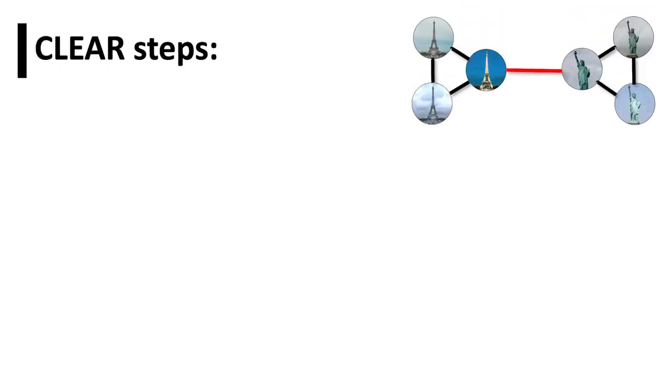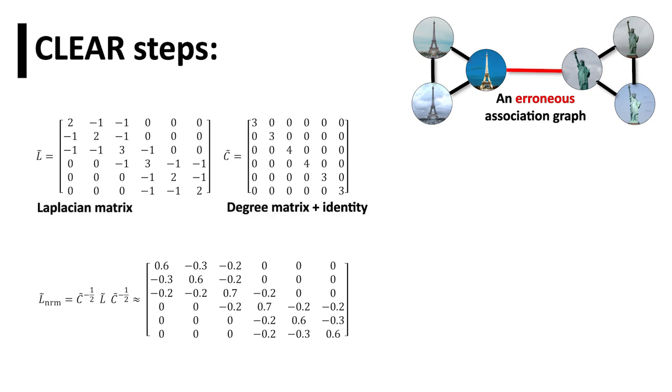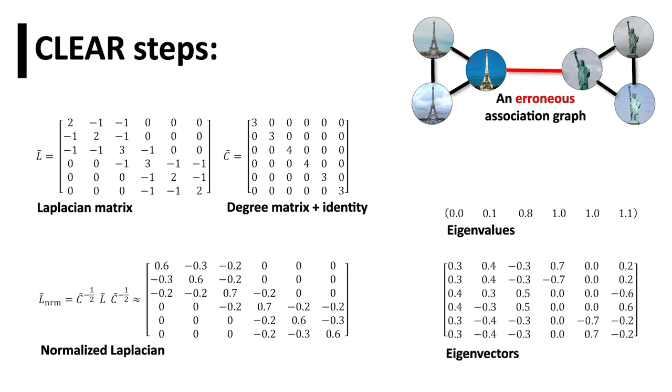Steps of the CLEAR algorithm can be summarized as follows. First, CLEAR computes the normalized Laplacian of the association graph, its eigenvalues, and eigenvectors.